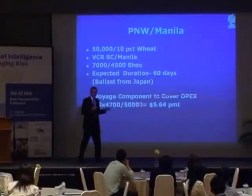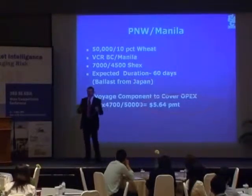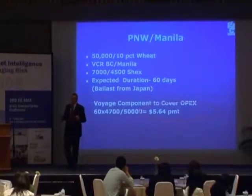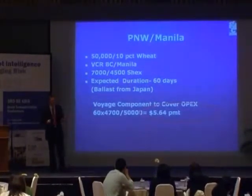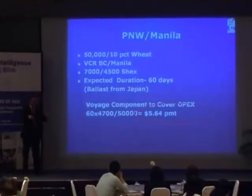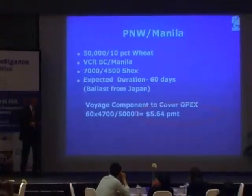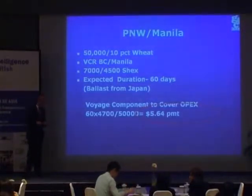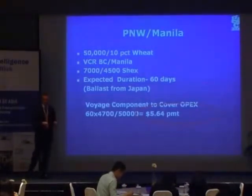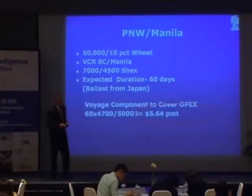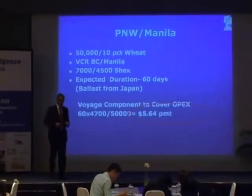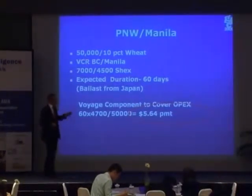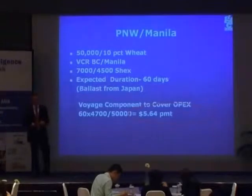Now that we know those basics, let's see how we can translate them into a voyage rate relevant to your trade. I came up with a hypothetical scenario: a shipment of 50,000 tons of wheat from Vancouver, BC, to Manila — 7,000 load, 4,500 discharge. It works out to about a 60-day voyage.